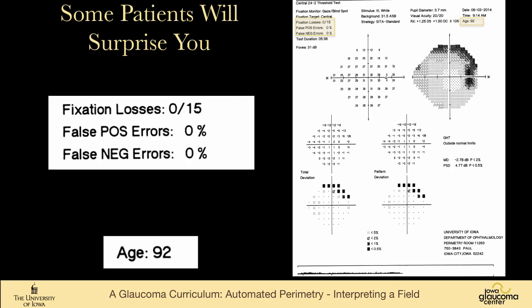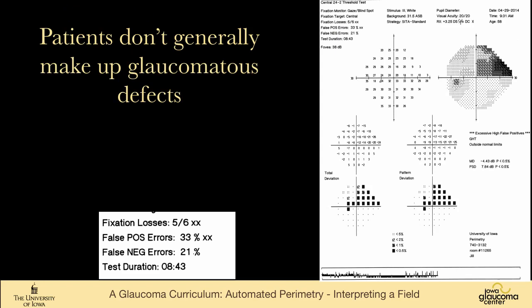An important point is that patients generally don't make up glaucomatous defects. So this person has terrible performance scores. Five of six follow-up fixation losses, 33% false positive, 21% false negative score, gaze tracker that's all over the map. But this defect, this superior arcuate defect that follows a nerve fiber layer and respects the horizontal, is real. But it's telling you that you don't want to follow this patient for subtle changes if they continue to have this sort of performance characteristics.